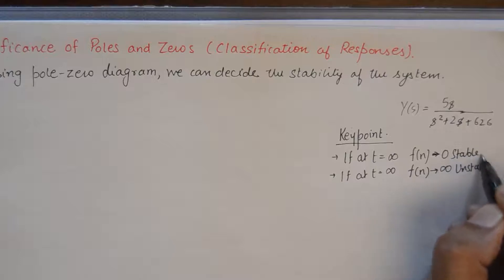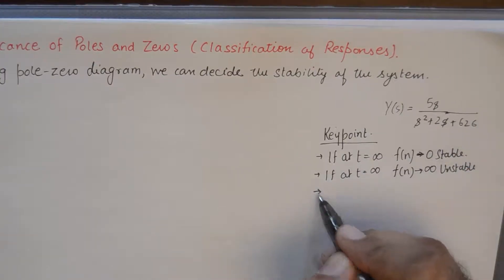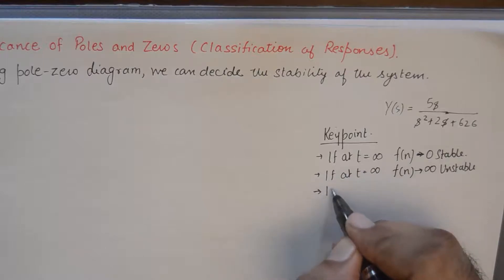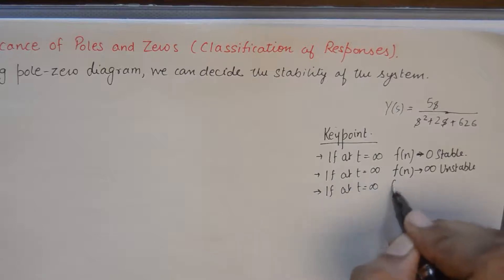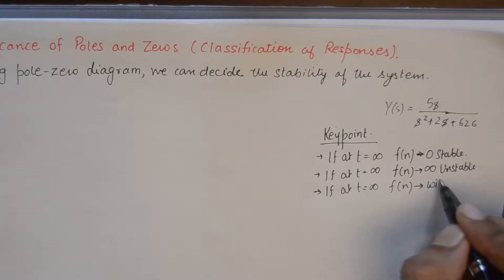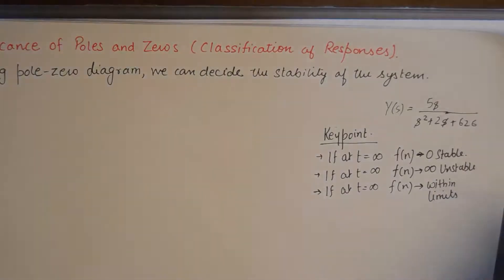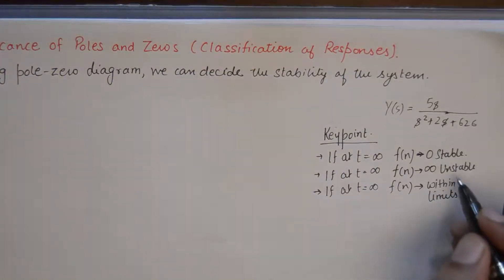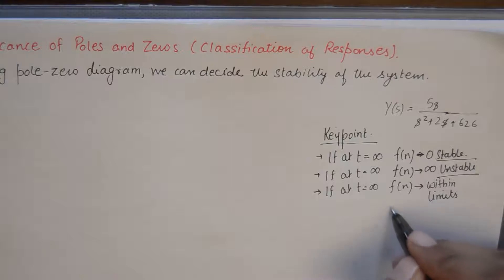So this will be stable, and this will be unstable. There could also be cases where, when the time approaches infinity, the system still remains within bounded limits. This kind of system will be known as marginally stable.